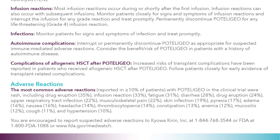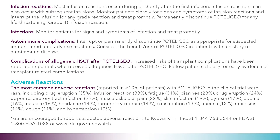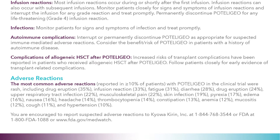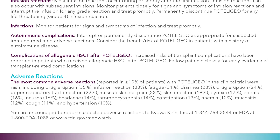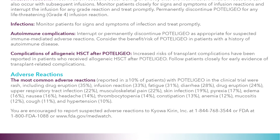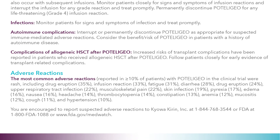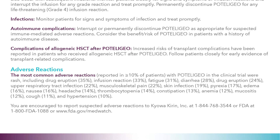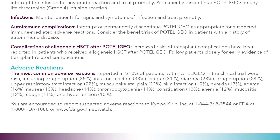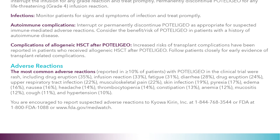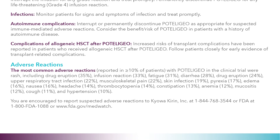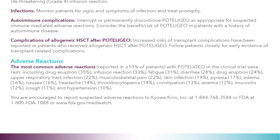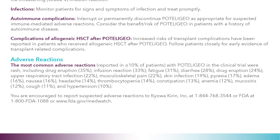Adverse reactions: The most common adverse reactions reported in ≥10% of patients with mogamulizumab in the clinical trial were: rash including drug eruption (35%), infusion reaction (33%), fatigue (31%), diarrhea (28%), drug eruption (24%), upper respiratory tract infection (22%), musculoskeletal pain (22%), skin infection (19%), pyrexia (17%), edema (16%), nausea (16%), headache (14%), thrombocytopenia (14%), constipation (13%), anemia (12%), mucositis (12%), cough (11%), and hypertension (10%). You are encouraged to report suspected adverse reactions to Kyowa Kirin, Inc. at 1-844-768-3544 or FDA at 1-800-FDA-1088 or FDA.gov/MedWatch.